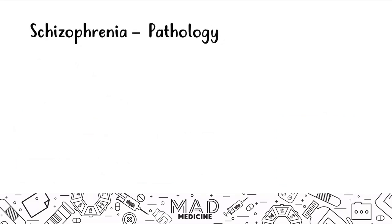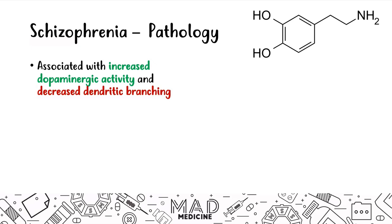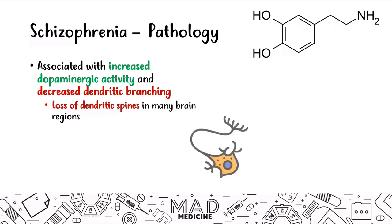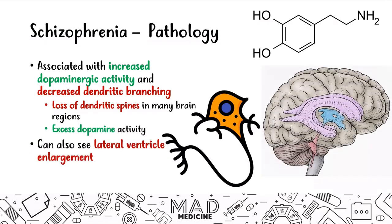When it comes to pathology, the main things you need to know for USMLE Step 1 are that schizophrenia is associated with increased dopaminergic activity and decreased dendritic branching. There is more dopamine going around in the brain, causing many of these symptoms. Loss of dendritic spines is seen in many regions, and you'll have excess dopamine activity throughout many brain regions. You'll also see lateral ventricular enlargement, as seen in the CT scans of healthy versus schizophrenic twins.